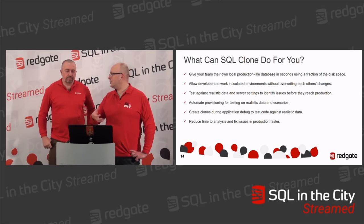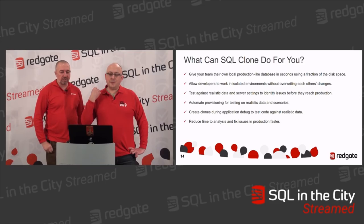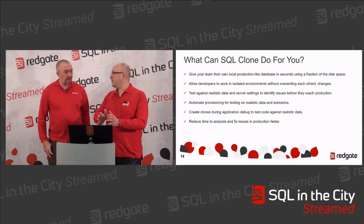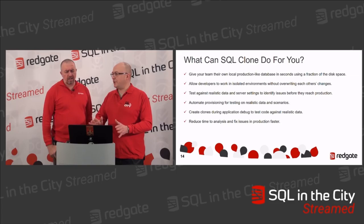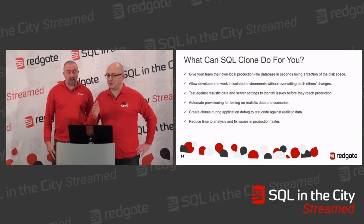We can give people local, isolated copies with a fraction of the disk space. When you no longer have to worry about disk space, you're much more likely to give people isolated copies — not overwriting each other's changes. Work on it until it works, then share when you're ready. And test against realistic data. You don't want to encounter production-like data for the first time in production — it's moving problems left, to the place where you can do something about it before it's too late.